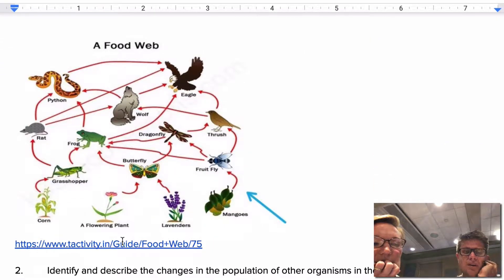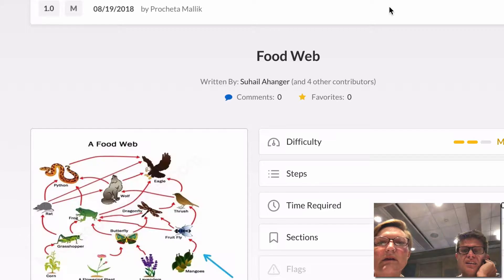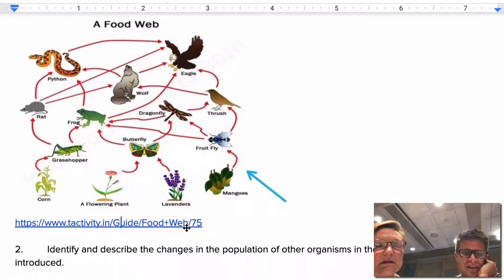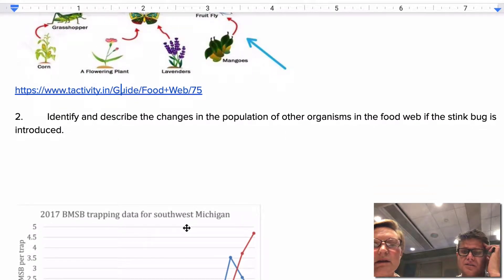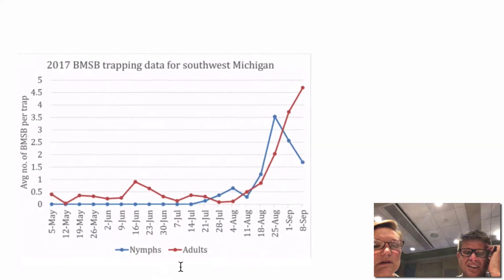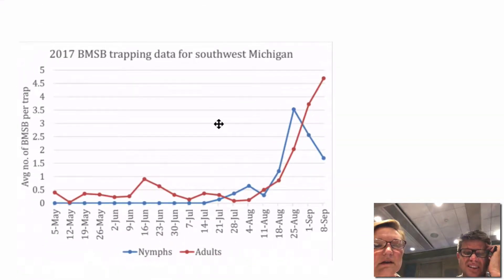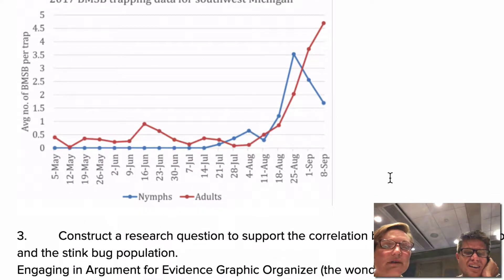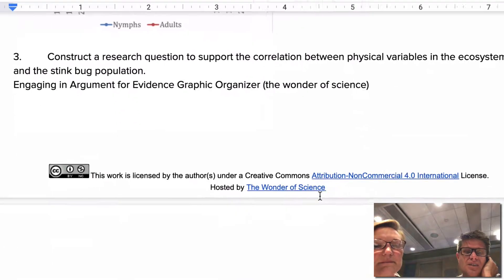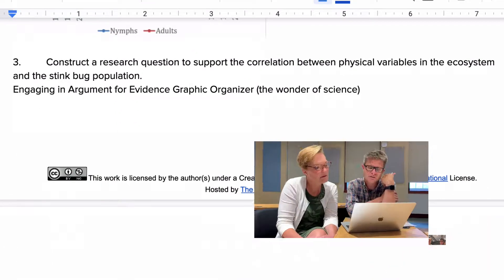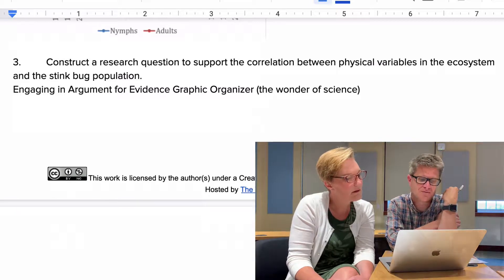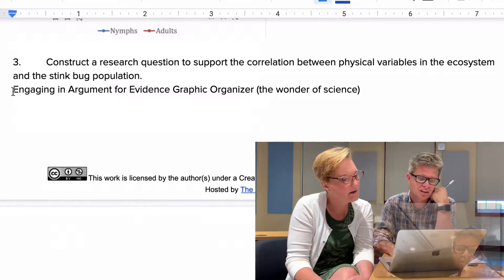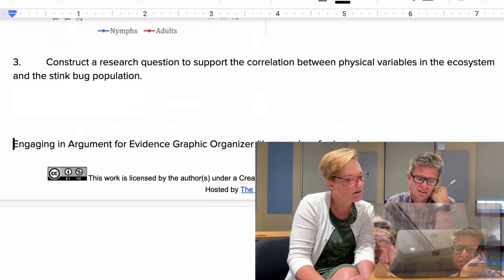We've got a food web, and there's a link to where it's coming from. The next task is to identify and describe changes in the population of organisms if the stink bug is introduced. Then we have trapping data — nymphs and adults — by date and average number of stink bugs in the trap. And then: construct a research question to support the correlation between physical variables in the ecosystem and the stink bug population.